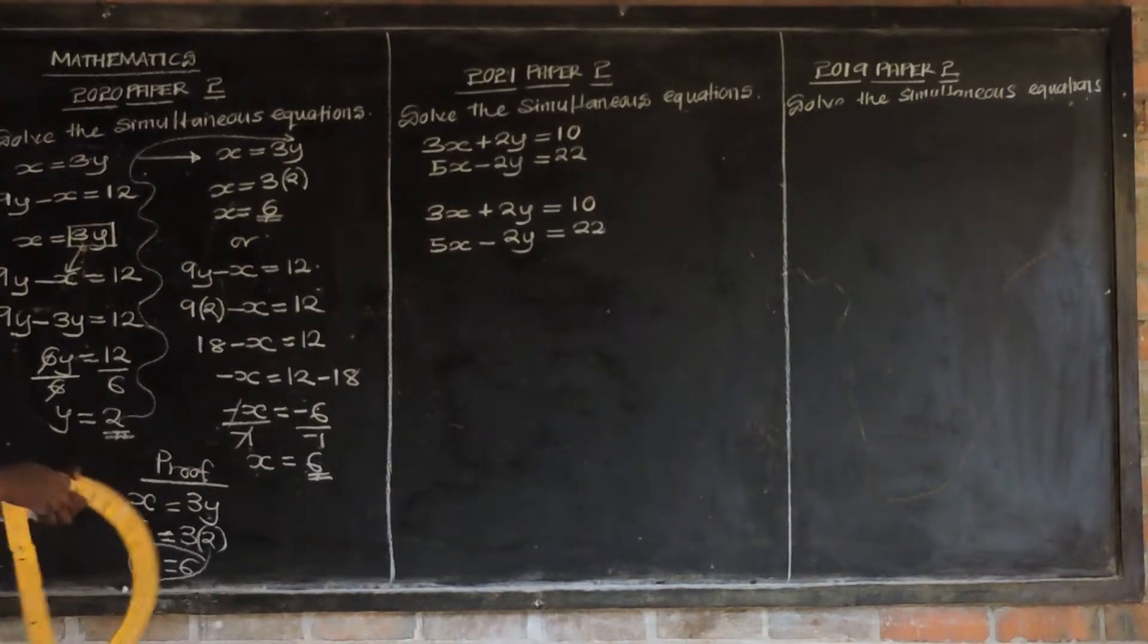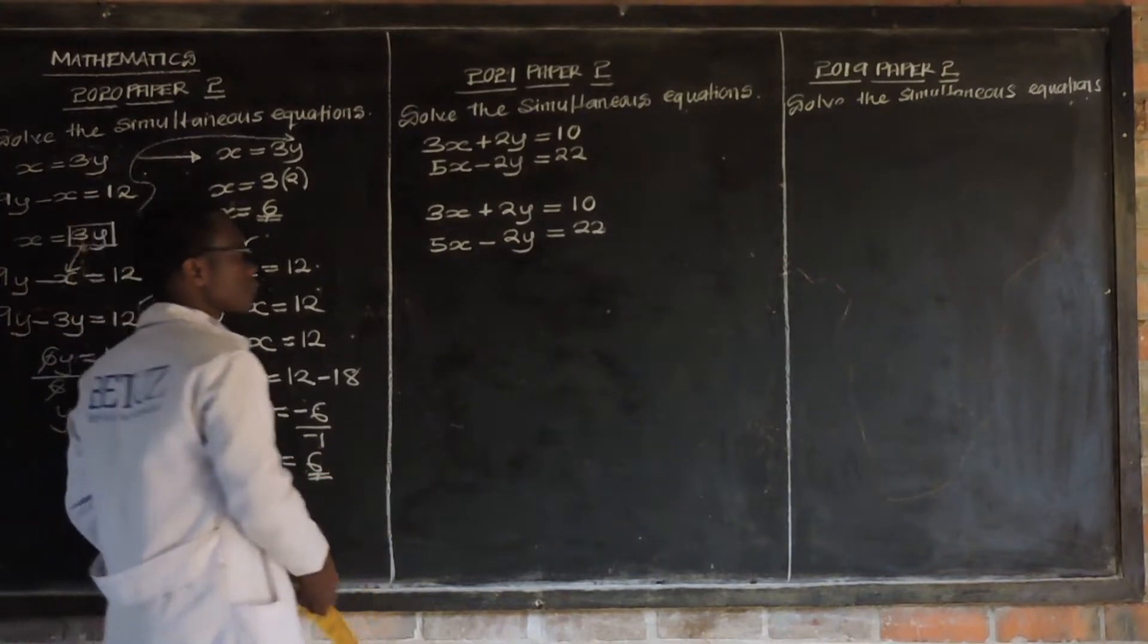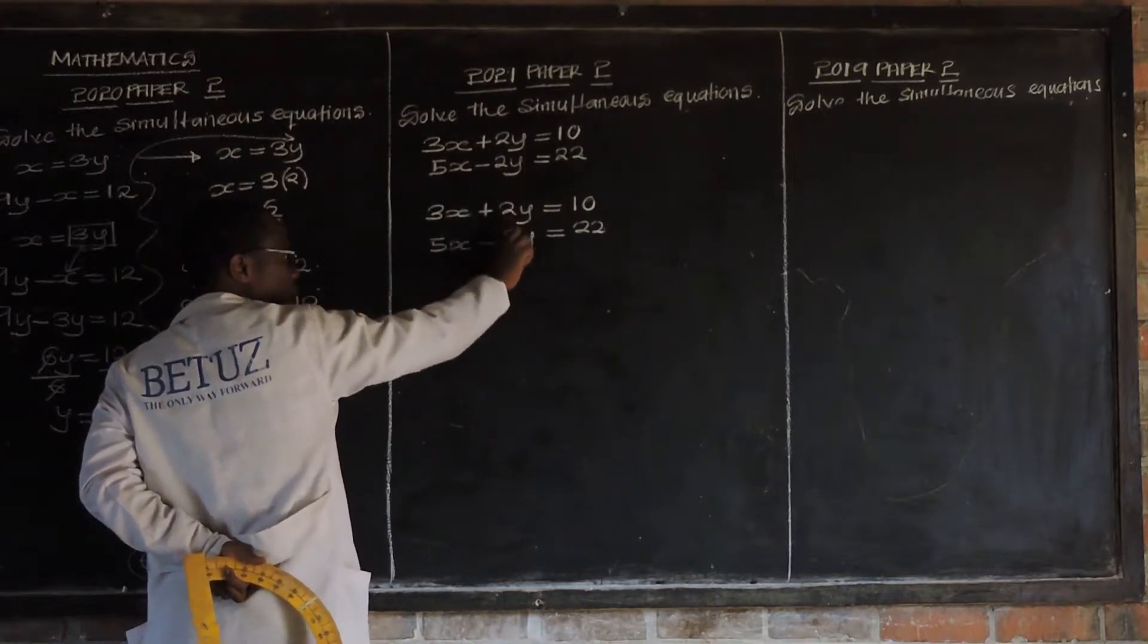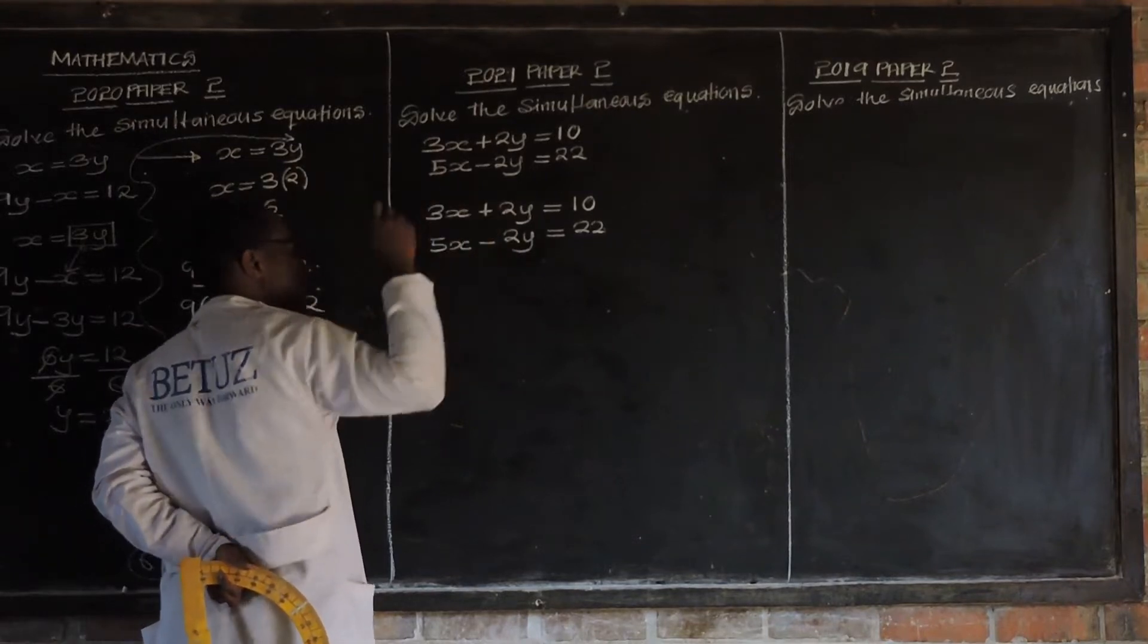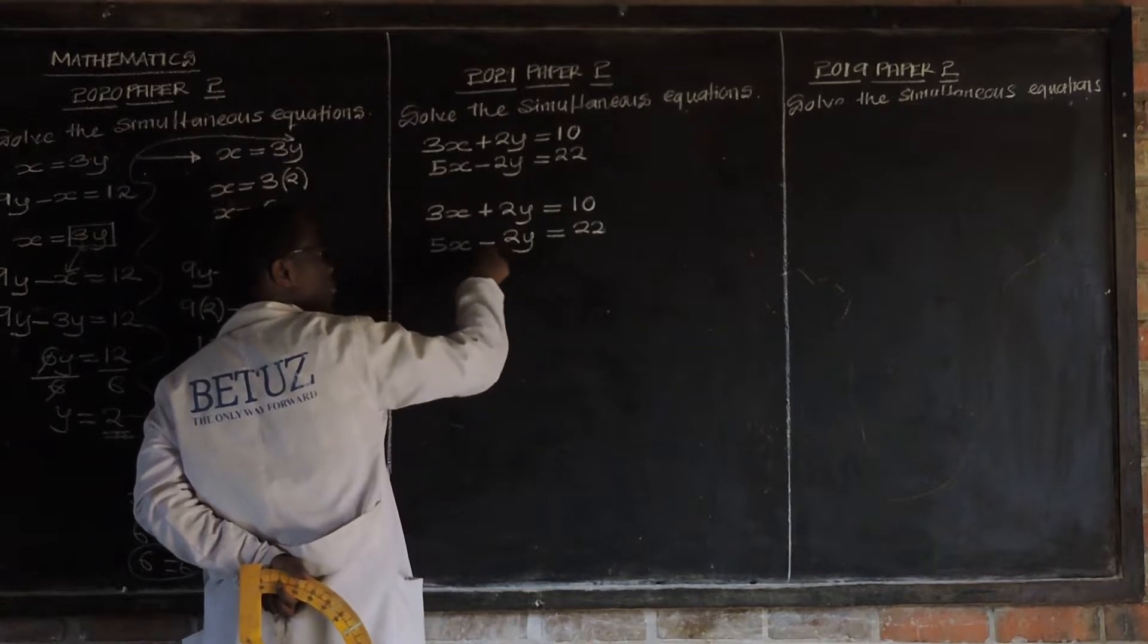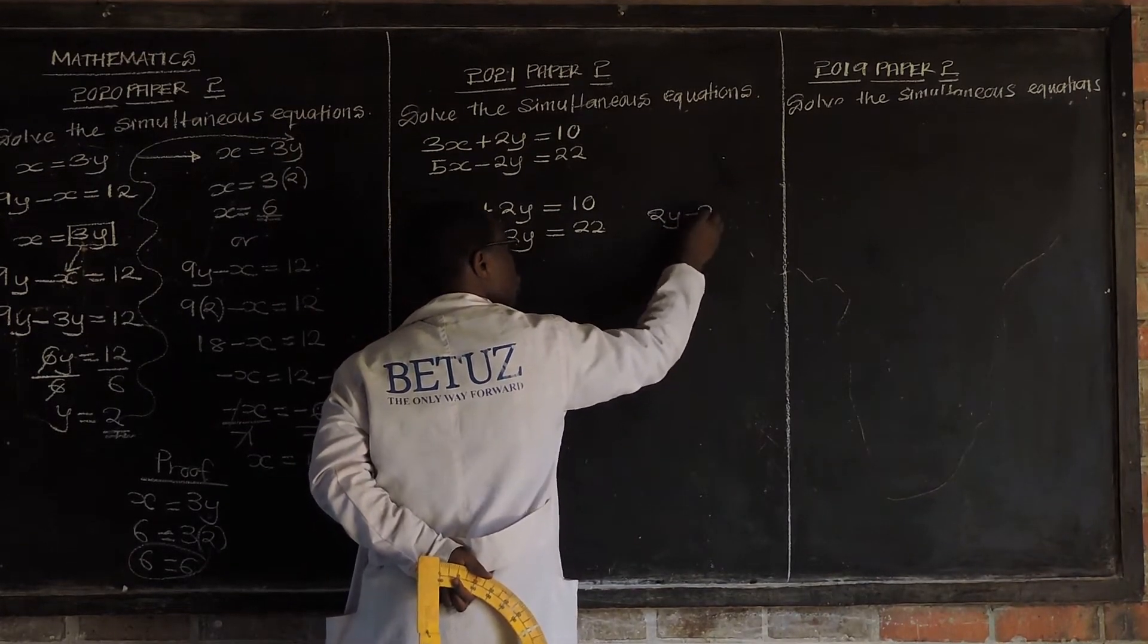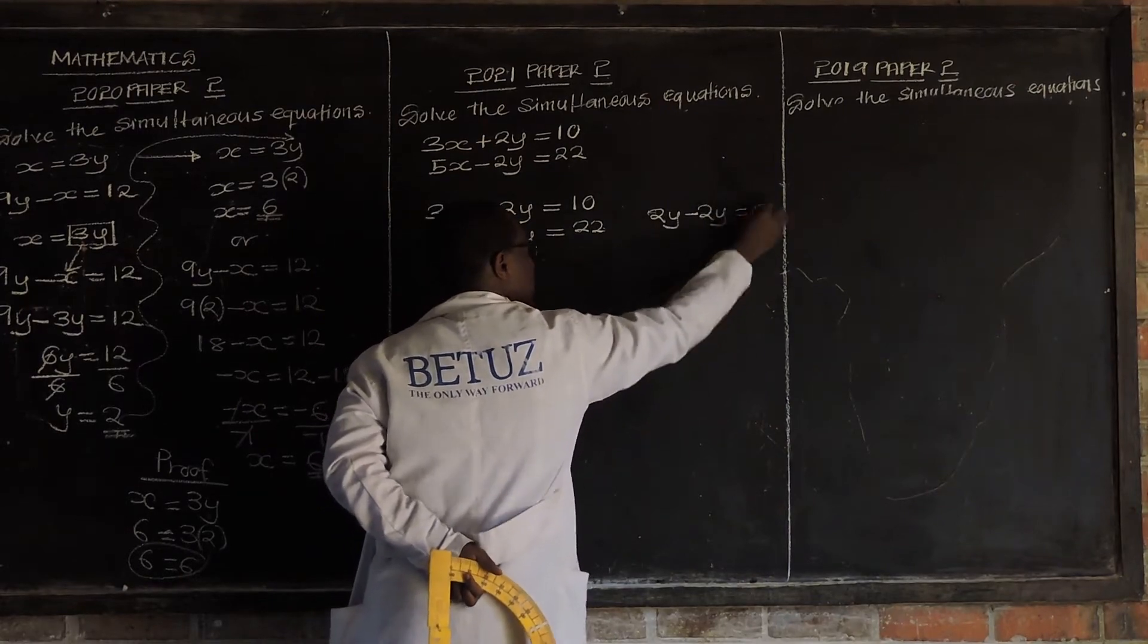Now, whenever we come across an equation like this on simultaneous equations, where we have the same coefficient and the same variables, then these two terms, these are the same. Then they both are different signs. This is as good as writing a 0 because this one is 2y minus 2y. It's like 2y minus 2y. What do you get? 2y minus 2y is 0.